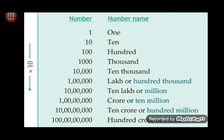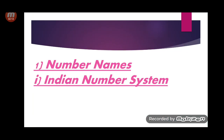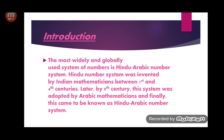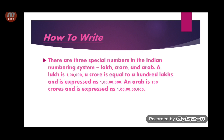First of all we will talk about number names in the Indian system. The most widely and globally used system of numbers is the Hindu-Arabic number system. The Hindu number system was invented by Indian mathematicians between the 1st and 4th centuries, and by the 9th century it was adopted by Arabic mathematicians. This came to be known as the Hindu-Arabic number system, which we are going to study now.